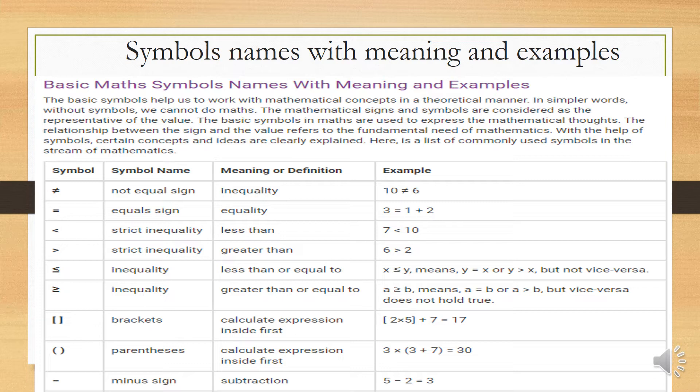The next symbol is brackets. Brackets calculate expressions inside first — just like PEMDAS or MDAS. For example: using brackets, 2 times 5 in brackets plus 7 — we multiply first: 2 times 5 is 10, then add 7, giving a result of 17.